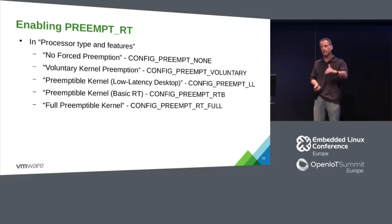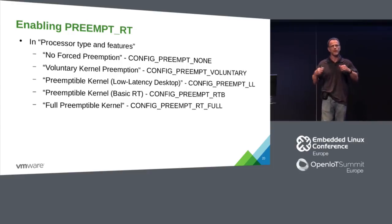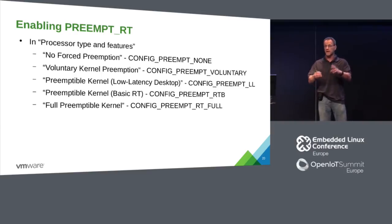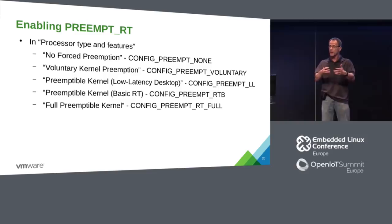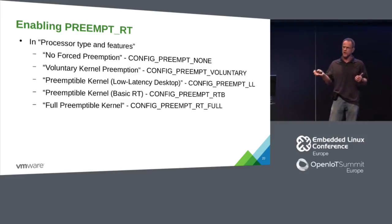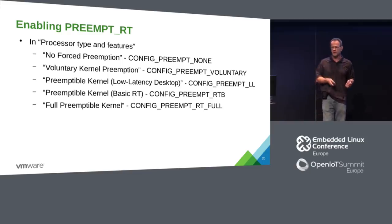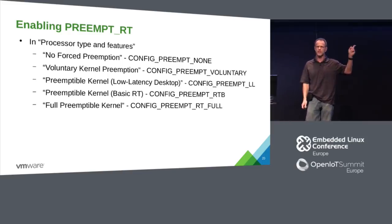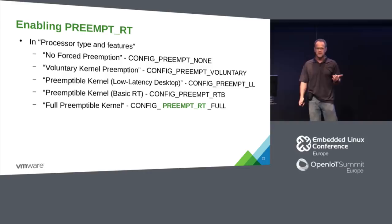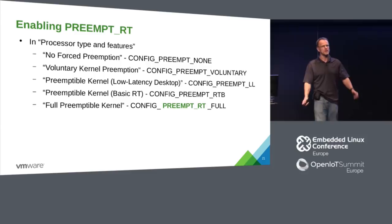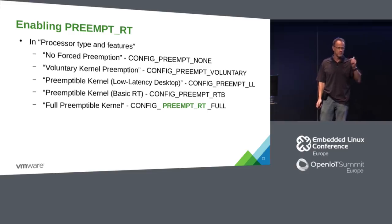Preemptible kernel / low-latency desktop is what we have today, where spin locks become preemption points — you disable preemption when holding a spin lock. It's already a soft real-time system. The new addition is full PREEMPT_RT, which is why we call it PREEMPT_RT — because that's the config option. It's going to be a config within the mainline Linux kernel.